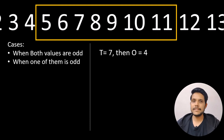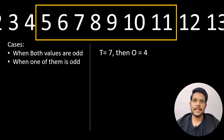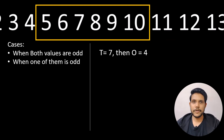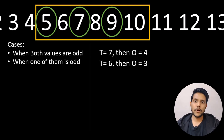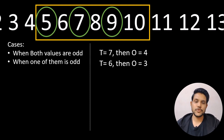The second case is where only one value is an odd value. In that case we shorten the window by 1. The number of values in this range is 6, and when we count the number of odd values it equals 3.